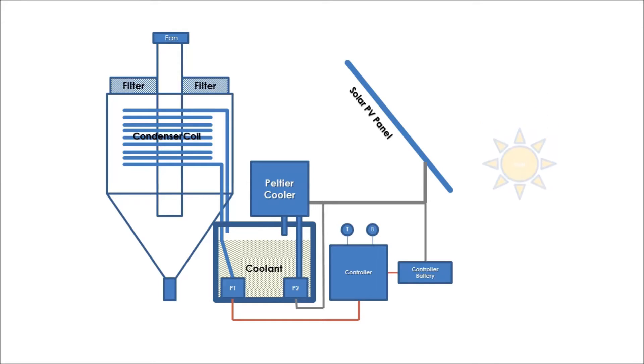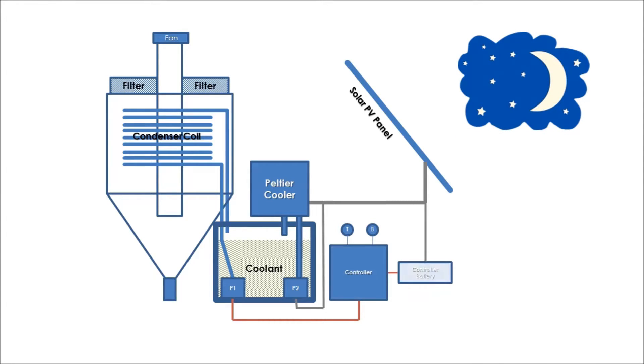When the solar PV system stops, the coolant is isolated in an insulated tank. The computer system monitors for ideal conditions to run the pump and pass the coolant through the condenser coils.